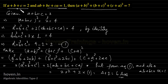So whenever we have an example of this type, where powers of 2 are present and 3 variables are involved, then the a plus b plus c whole square formula will come to our rescue in one way or the other.